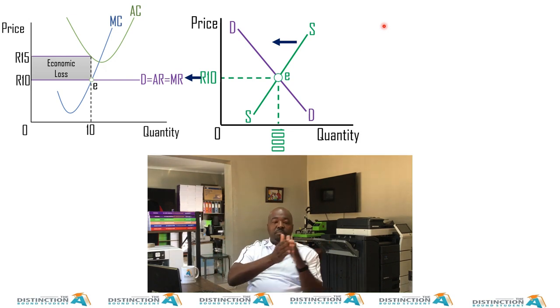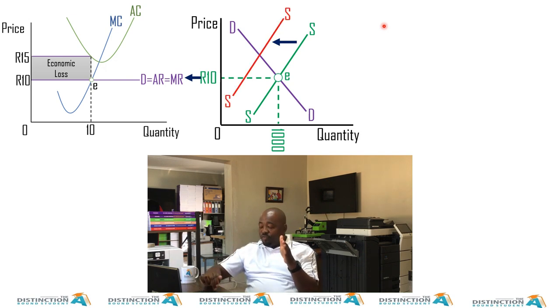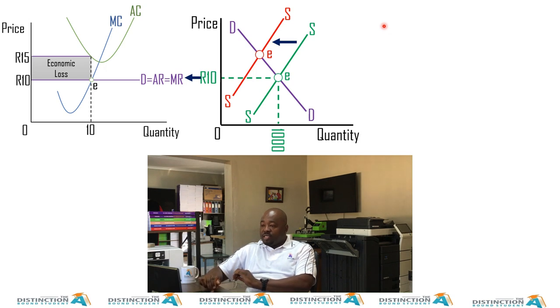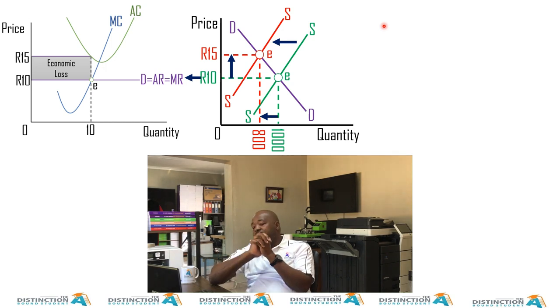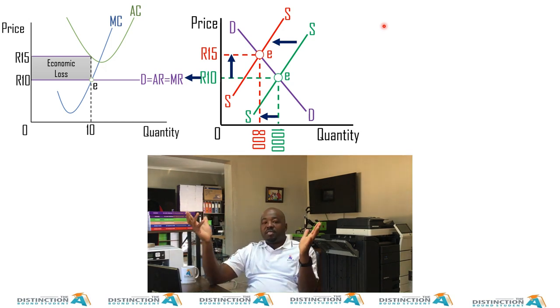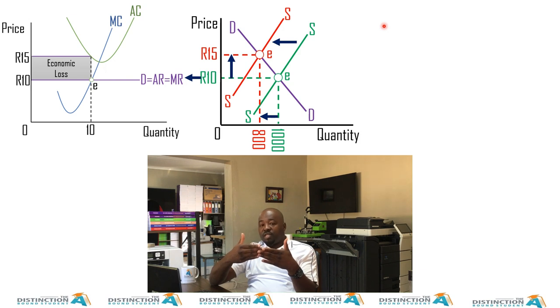We have our supply curve that is going to shift to the left. It shifting to the left means that supply is decreasing because firms are shutting down. There are less firms supplying the products, less firms supplying maize. So we have a new point of equilibrium.